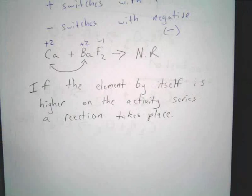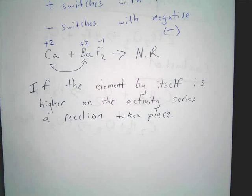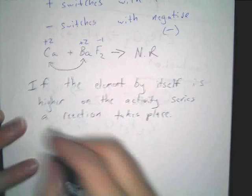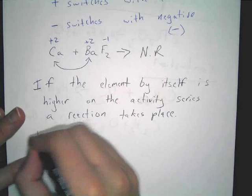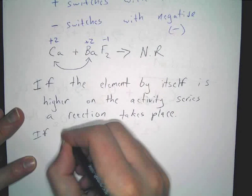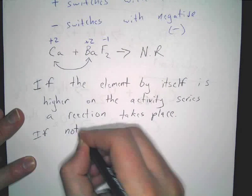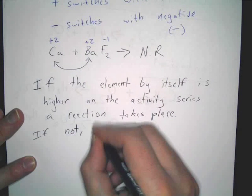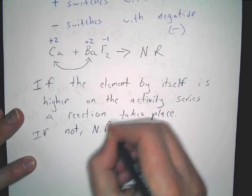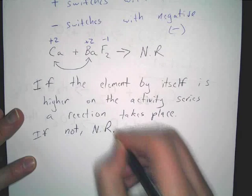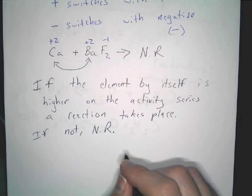If the element by itself is higher on the activity series, a reaction takes place. If not, you just write NR — no reaction.